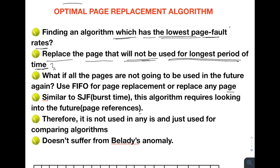If you use this strategy, you will get an algorithm with the lowest page fault rates, and this algorithm is called the optimal page replacement algorithm. The name 'optimal' is because it provides the lowest page fault rates. If you take any reference string and run optimal along with other algorithms, the optimal page replacement algorithm will always have the lowest page fault rate — that's why the name optimal.